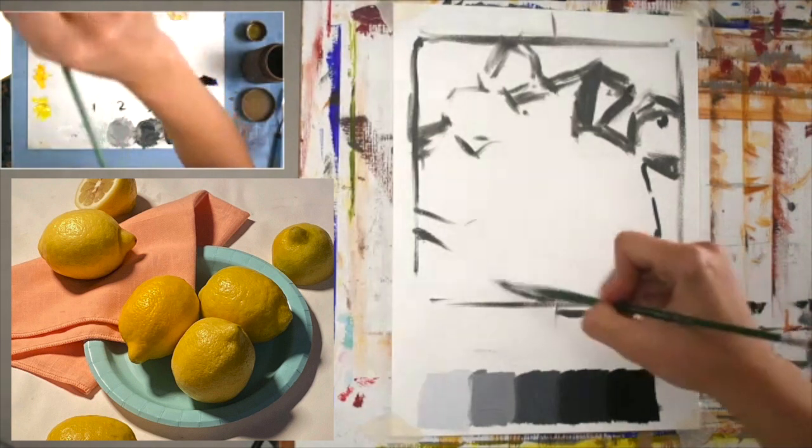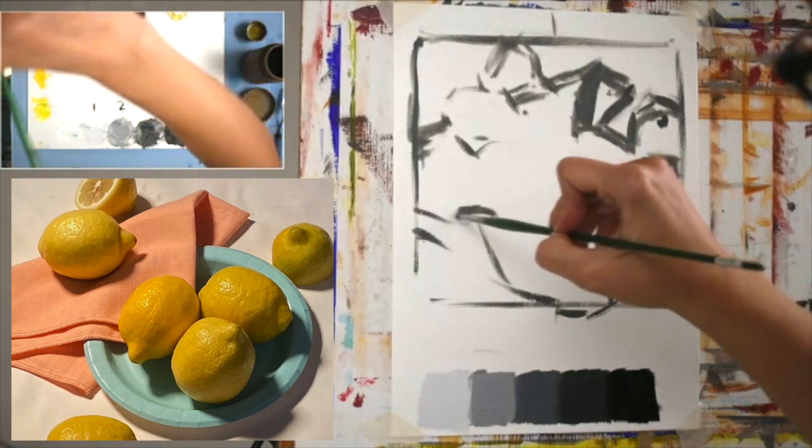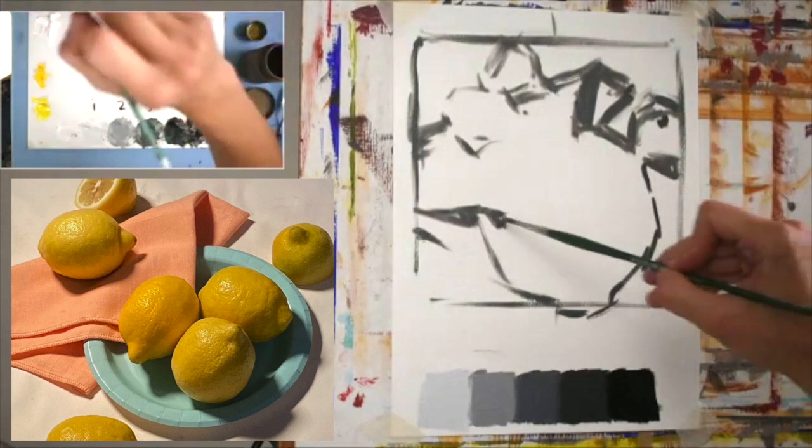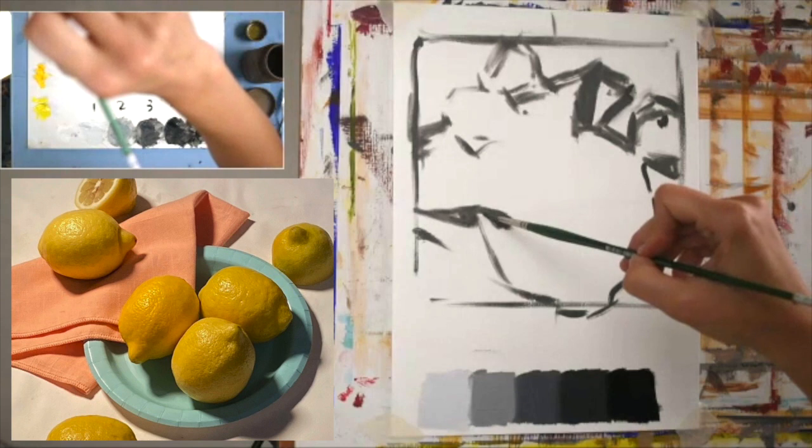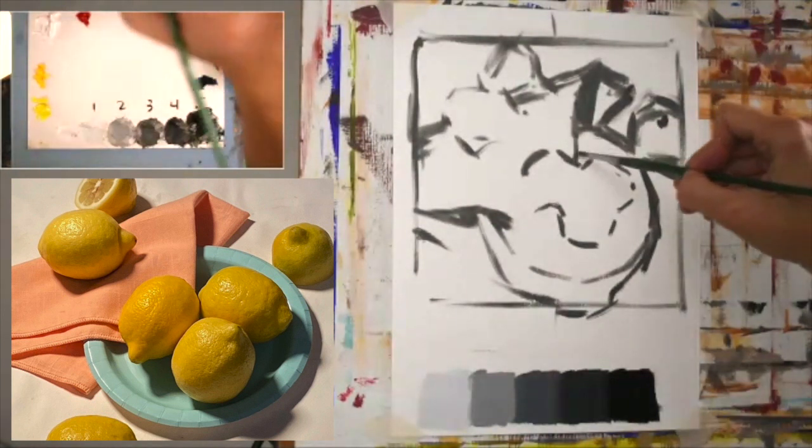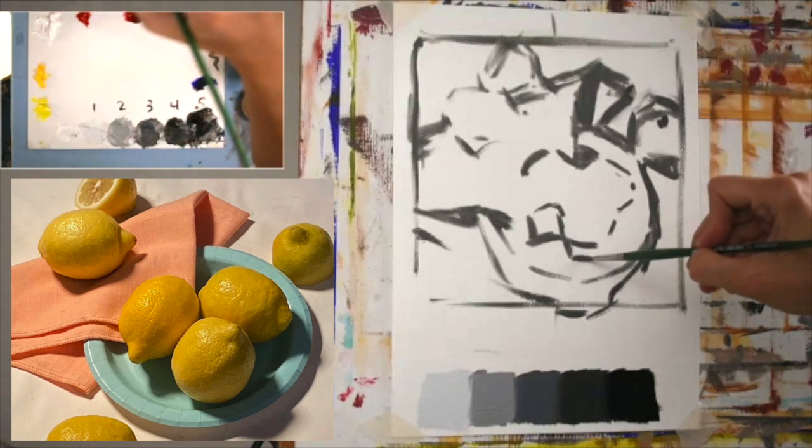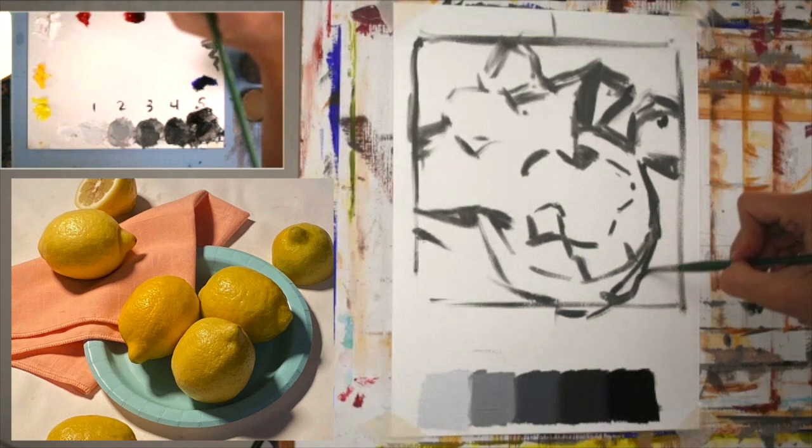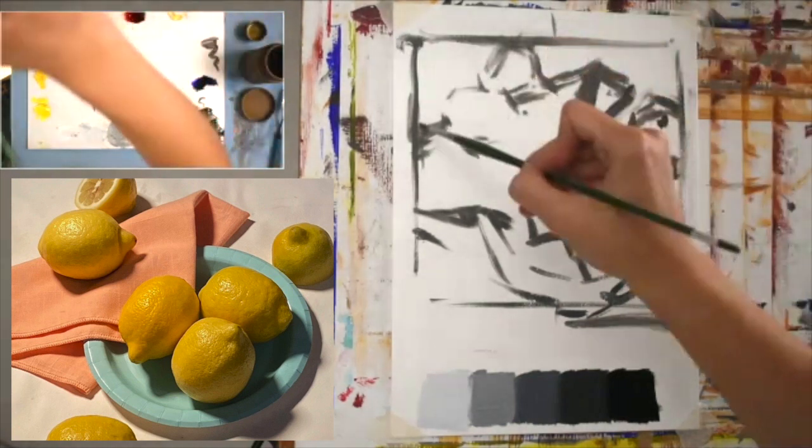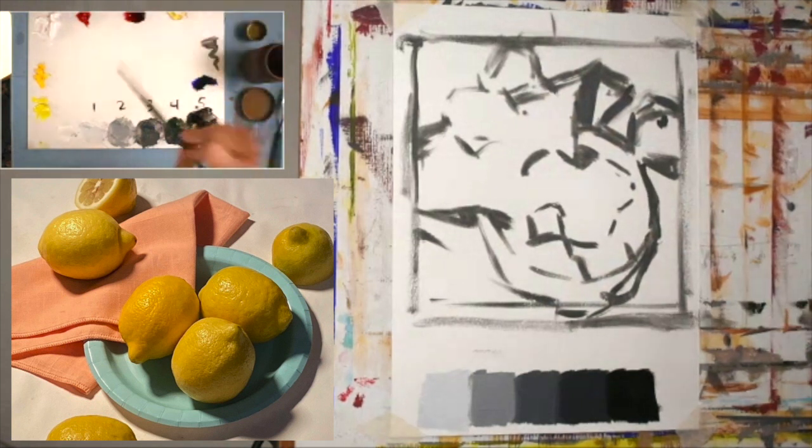When someone walks into the gallery from 30 feet away, they can look at your canvas on the wall, and before they even know that it's a painting of lemons, they want to go check it out. Oops, I went outside the line. Make my square bigger.